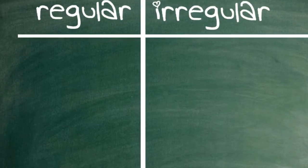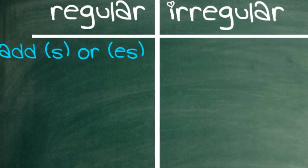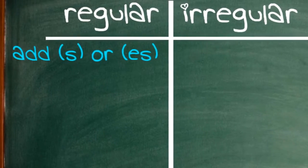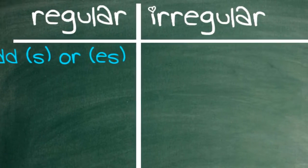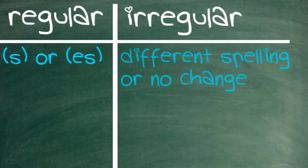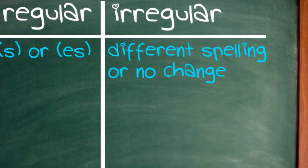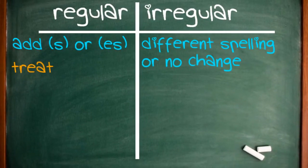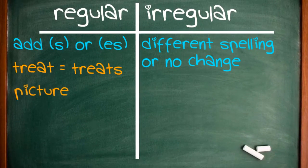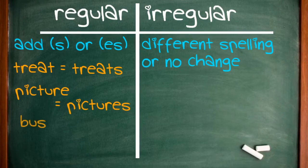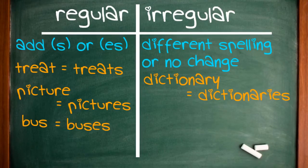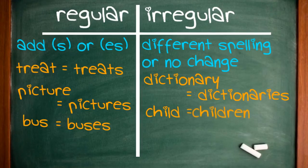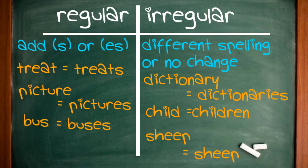Last but not least, we have regular and irregular nouns. Nouns whose plurals are formed by adding S or ES are called regular nouns. Meanwhile, irregular nouns form their plurals by having a different spelling or having no changes at all. For example: treat, treats; picture, pictures; bus, buses; dictionary, dictionaries; child, children; sheep, sheep.